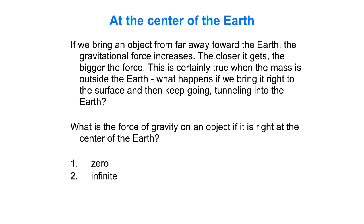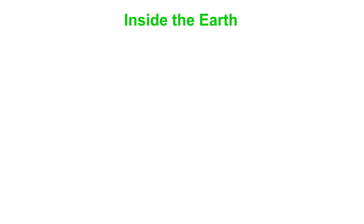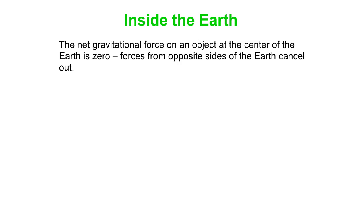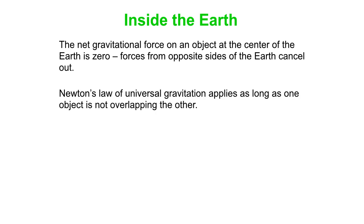I'm only going to give you two choices: zero or infinity. It turns out the net gravitational force is zero if the object is at the exact center of the Earth. You can prove that with a free body diagram — forces pull from one side of the Earth and equally from the other side, and those forces cancel out. However, if you use GMm over r squared and r goes to zero, you might expect an infinite value. But Newton's law of universal gravitation — the GMm over r squared equation — only works when the objects are outside one another, not inside.